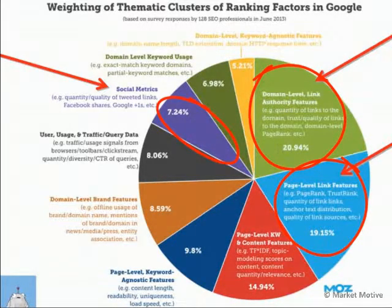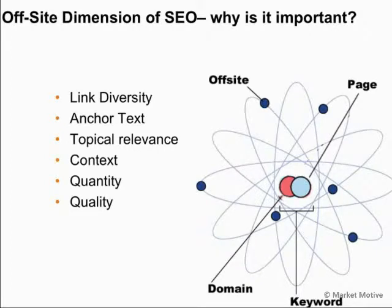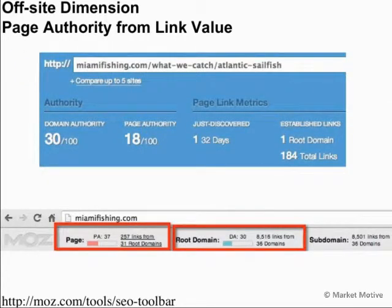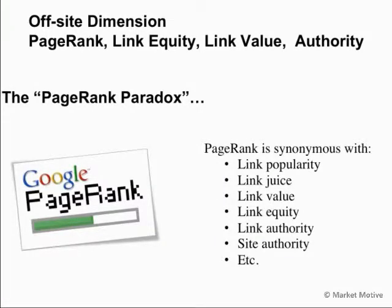This is shifting from link-based metrics to social metrics in some regards, but the influence of off-site equity is still certainly there. Important factors in this area include link diversity, different types of links, anchor text and the keywords it contains, the relevance of sites linking to you, and quantity and quality. We can measure this with Open Site Explorer — for fishingcharters.com we have 35 root linking domains equating to 1,500 root links. All of this off-site value is the beginning of what became Google PageRank, which was synonymous with link popularity, link juice, and link value.